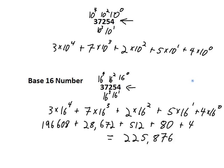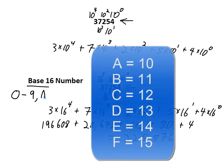In base 10, we use ciphers from 0 to 9 — that's 10 different symbols, which is part of what makes it base 10. For base 16, we need 16 different ciphers to represent 16 different values. The first 10 are the same digits, 0 through 9. For the remaining 6, we use the letters A through F — capital or lowercase, there's no strict standard. So we have 16 different ciphers to represent all the possible digit values.